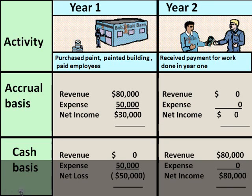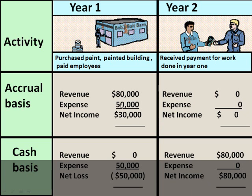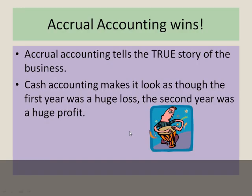But let's say you said, no, I'm going to do cash accounting. I didn't get paid, so my revenue year one was zero. I did pay all my expenses, so my costs were $50,000. In year one, I lost $50,000 — revenue minus expenses is a loss. But look over here in year two: I got paid, so I get to call it revenue — $80,000 — had no expenses, so I had profit of $80,000. Now, this doesn't really tell the true story of this business: a $50,000 loss, then an $80,000 profit. It's better to match the expenses and the revenue in the same period. So accrual accounting really wins because it tells the true story. Cash just makes it look like you had a big loss and then the next year a big profit.